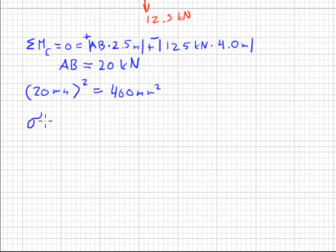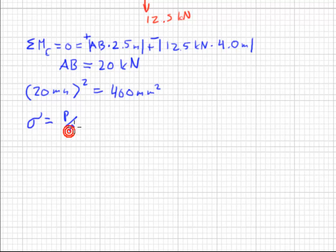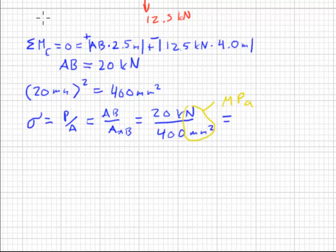So the stress, normal stress, on this tension member is the force over the area, in this case AB over the area of AB. 20 kilonewtons over 400 square millimeters. You'll notice a newton per square millimeter, this is a megapascal. The K stands for a thousand. So we have 20,000 divided by 400. We have 50 megapascals.